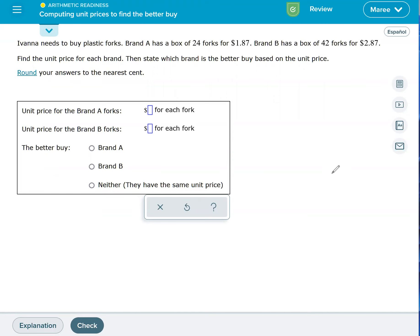to buy plastic forks. Brand A has a box of 24 forks for $1.87, and Brand B has 42 forks for $2.87. There are some keywords right here—you want to do how many dollars for each fork, per fork. So we want to take the cost and divide it